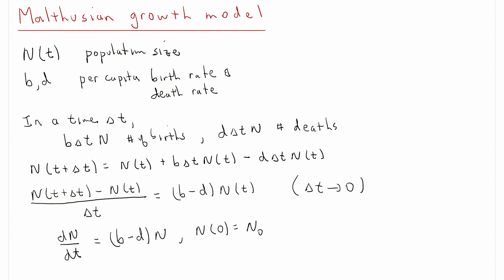This is a differential equation with a well-known solution. If the derivative of the function is equal to a constant times the function, that should be the exponential function. With this initial condition, the solution will be n of t equals n naught times e to the birth rate minus the death rate times t. The population size grows exponentially if the birth rate is larger than the death rate, and decays exponentially if the death rate is larger than the birth rate.